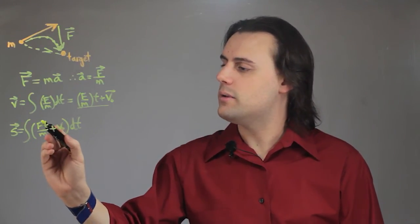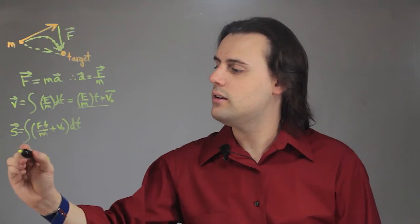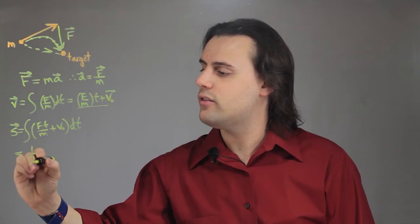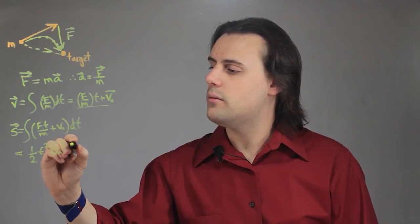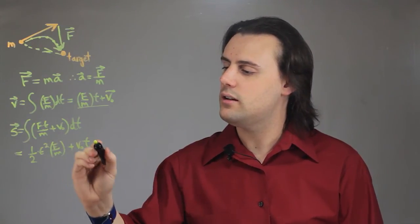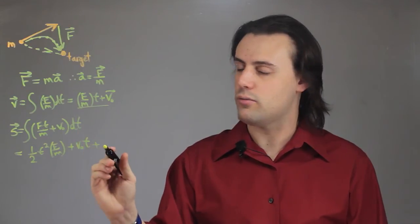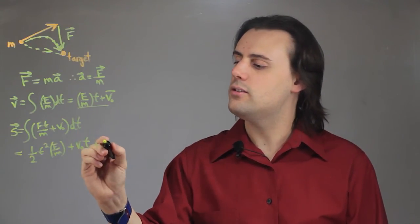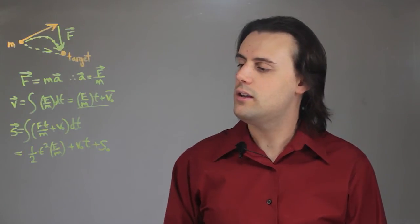And because there is a linear t term here, we get one half t squared times F over m plus v naught times t plus an integration constant, which again is interpreted as the initial condition, here the initial position.